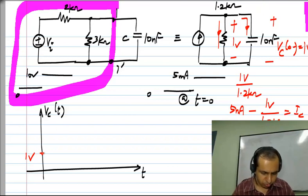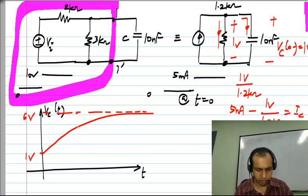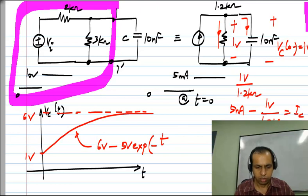So it starts from 1 volt and reaches 6 volts and the equation will be exactly the same as before. Of course, it will be 6 volts minus 5 volts exponential minus T by tau. If you set the independent source to 0, we just have 1.2 kilo ohms across 10 nanofarad, which is 12 microseconds and in fact, we have to get exactly the same answer as before, otherwise we would be in trouble.